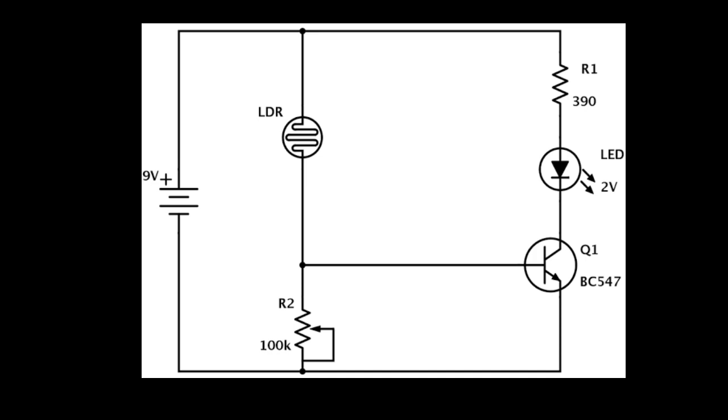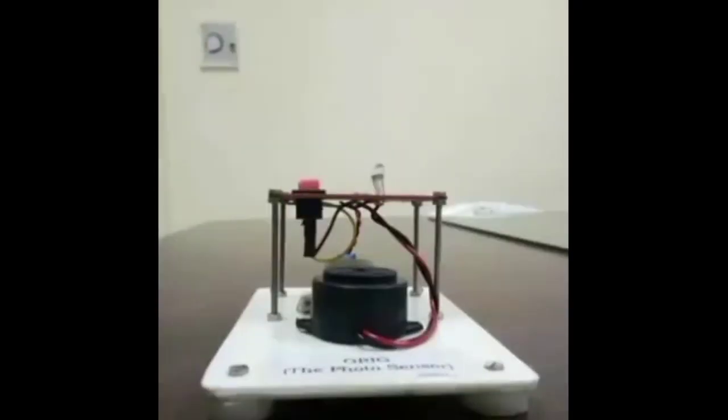This is the circuit diagram of the photosensor. Here, a 9V battery is connected in parallel with the LDR (light-dependent resistor), two resistors, LED, and transistor. A buzzer is placed between resistor 2 and the transistor. Applications of LDR are: